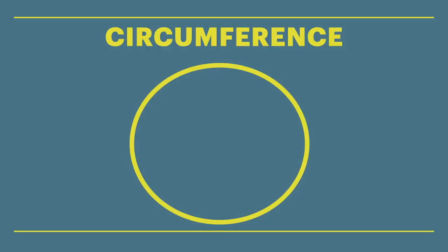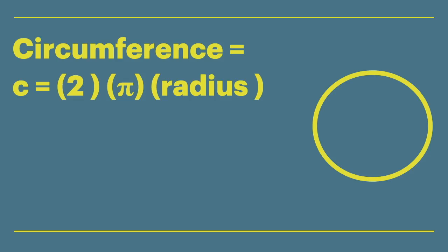And there's an equation to help us find that circumference. The circumference or perimeter of a circle, noted by a lowercase c, is equal to 2 times pi, that funny little symbol in the middle, times the length of the circle's radius. The equation is often written as c equals 2 pi r.